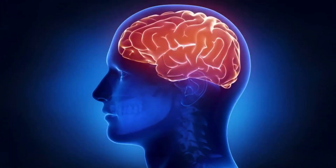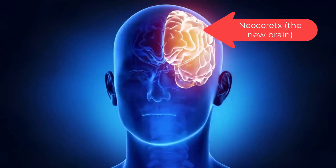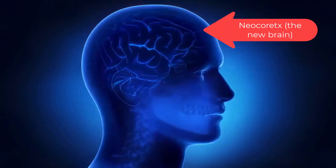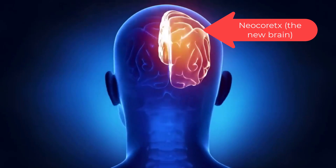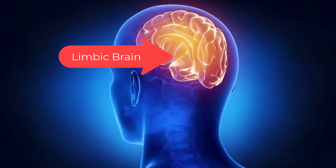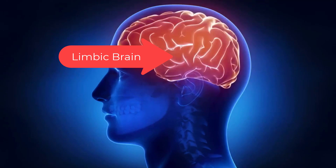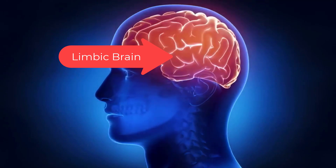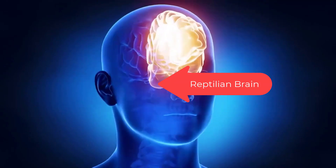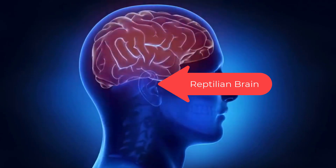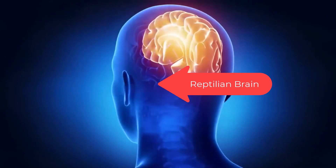Your brain has three basic layers and only one real decision maker. The new brain, the neocortex — it thinks and processes rational data. The middle brain, the limbic brain — it feels emotions and is our instinct for fight-or-flight response.